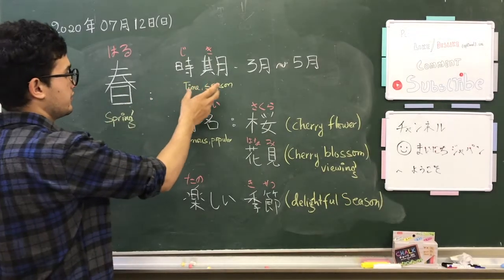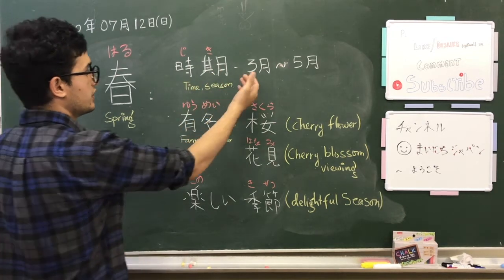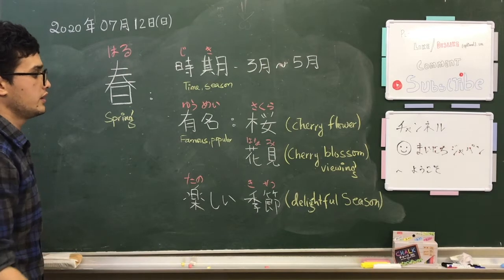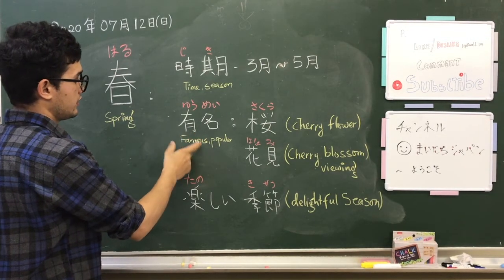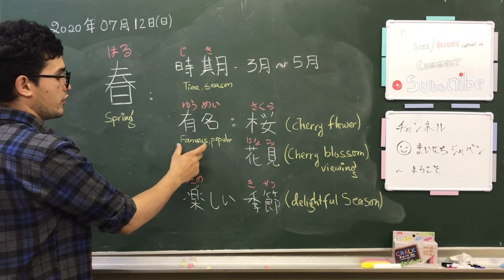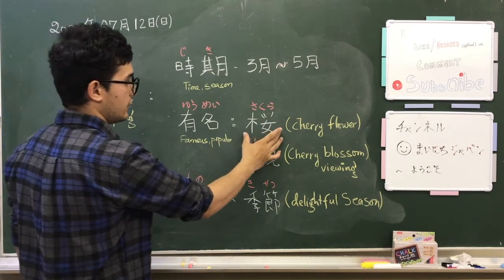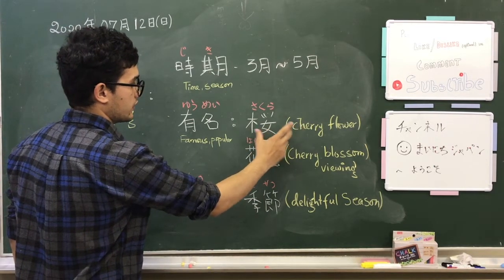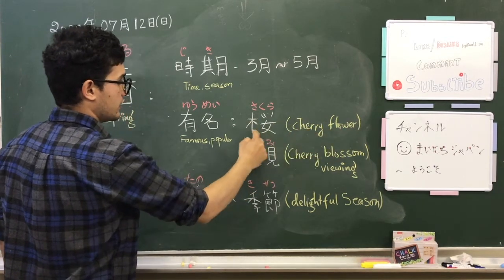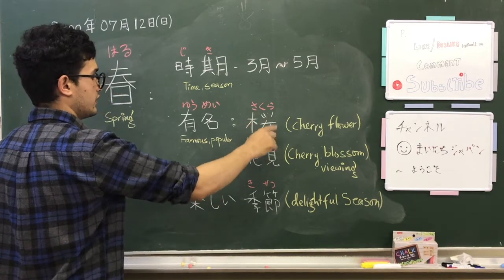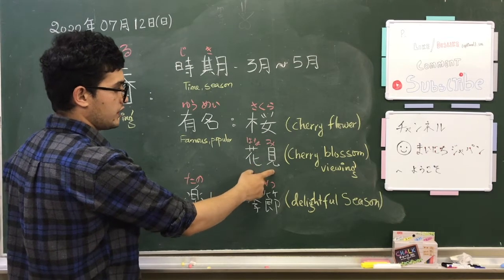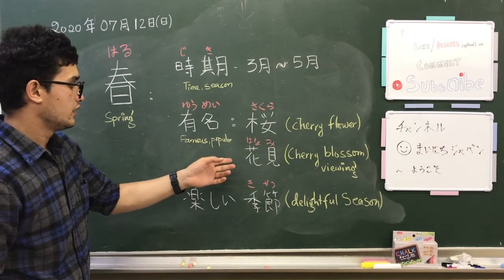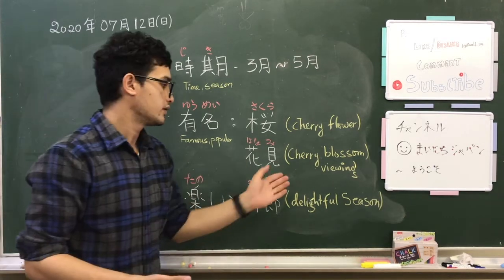We discussed this before - Siki. The season starts from March to May. It is famous for Sakura, which is cherry flower. This is the kanji for Sakura which means cherry - this is a single kanji. Next is Hanami or cherry blossom viewing, which is when people go to watch the cherry flowers after they blossom.